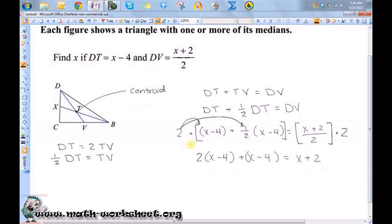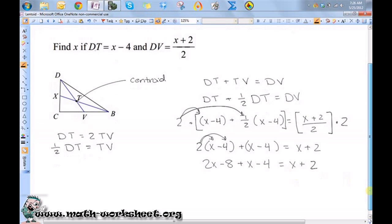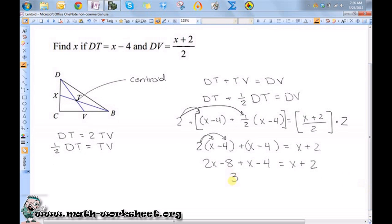So let's distribute this 2. So I get 2x minus 8 plus x minus 4 equals x plus 2. So 3x minus 12 equals x plus 2.